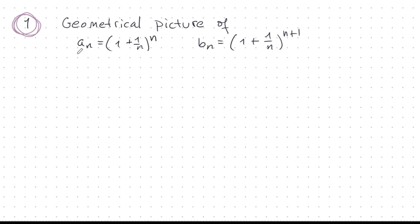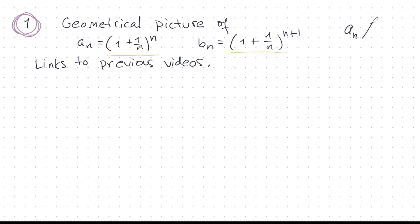Today I will show you a beautiful geometrical interpretation of Euler's sequences. Euler's sequences are AN and BN. We've studied them before in previous videos — I will leave links to those videos, they're good background if you're unfamiliar. The thing to remember right now is that AN is a monotone increasing sequence that approaches E from below, and BN is above E, approaches E from above, and is monotone decreasing.